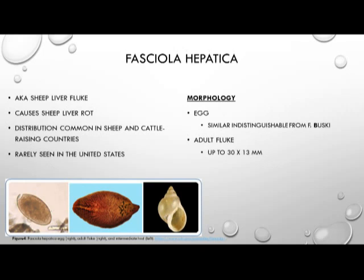Our next organism is Fasciola hepatica, known as the sheep liver fluke. It causes sheep liver rot and is distributed in areas common to sheep and cattle-raising countries. It's rarely seen in the United States due to the lack of the first snail intermediate host being endemic here. The egg is very similar in size, shape, and appearance to Fasciolopsis buski, but the adult fluke is a little smaller, measuring 30 by 13 millimeters.